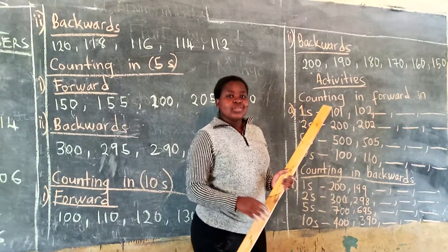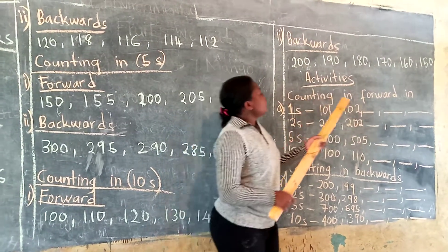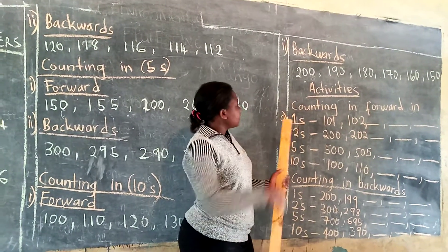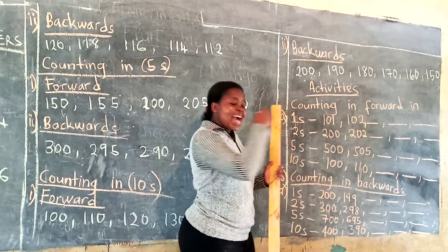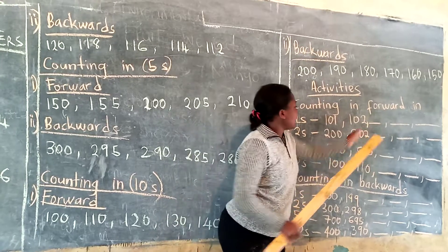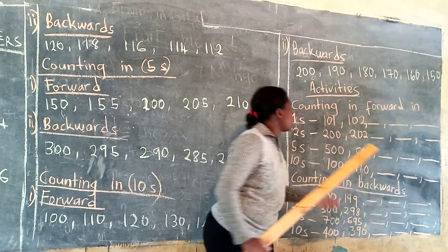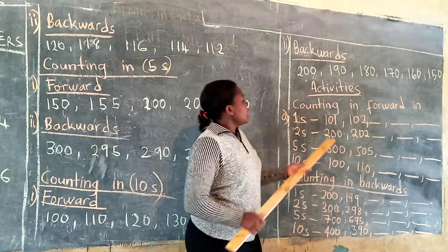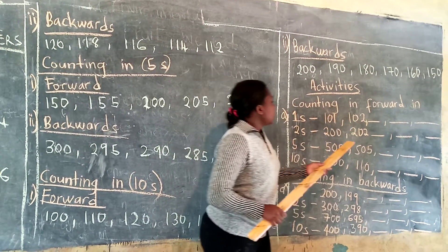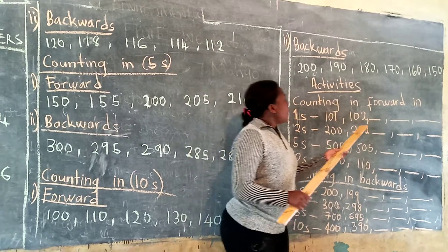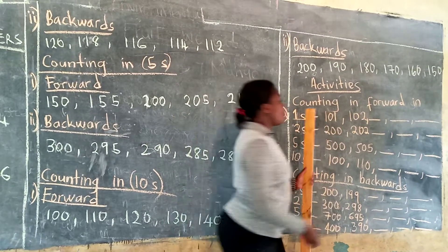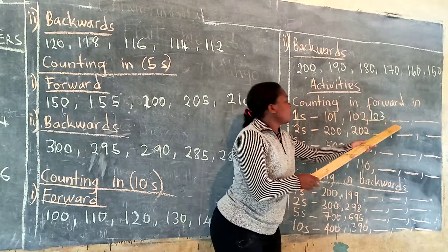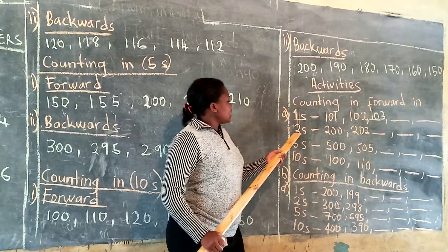I hope you have understood. Here there is an activity: counting forward in ones. Remember you are adding. I'll do the first one, the rest you can do on your own. First, there is 101; you add plus 1, that is 102. Now you add 102 plus 1, you'll get 103. You can continue from there.